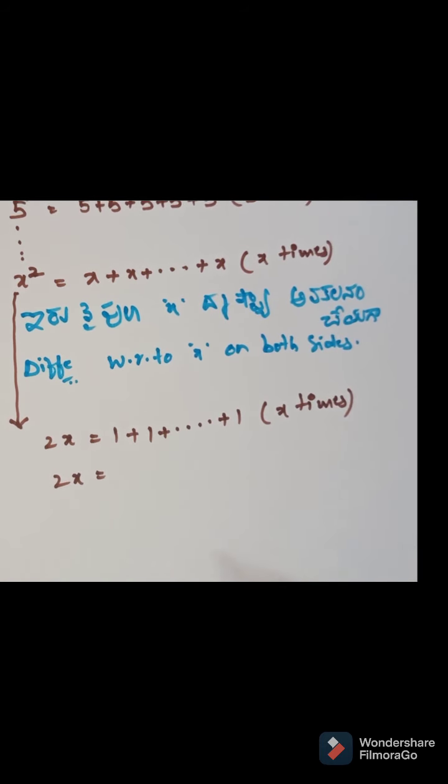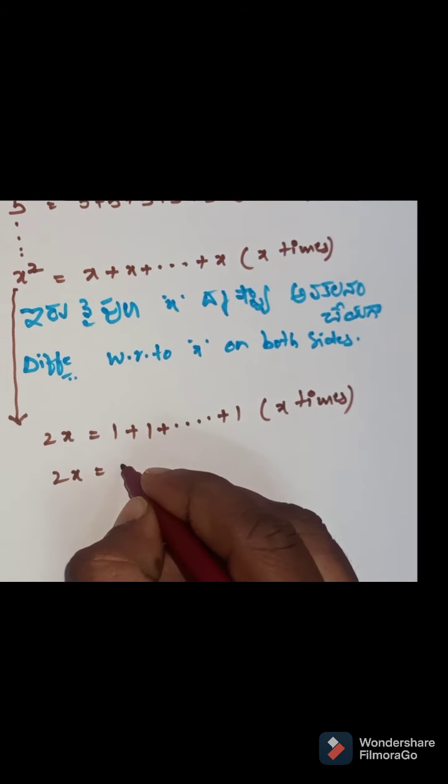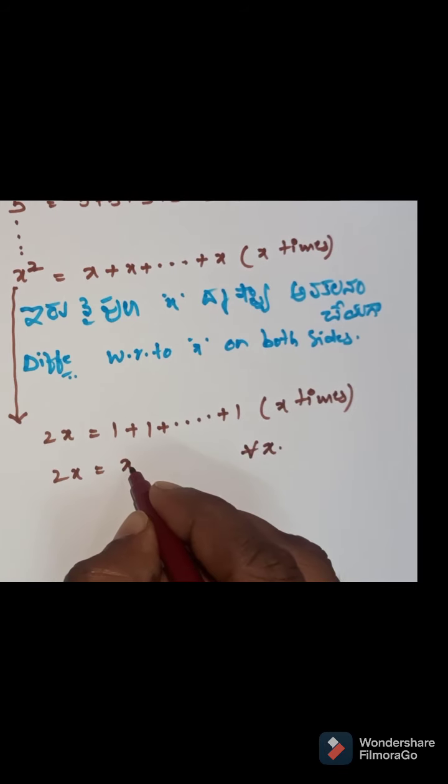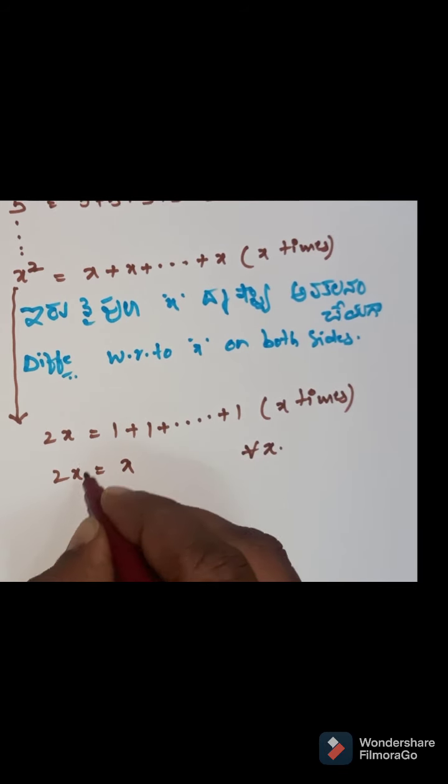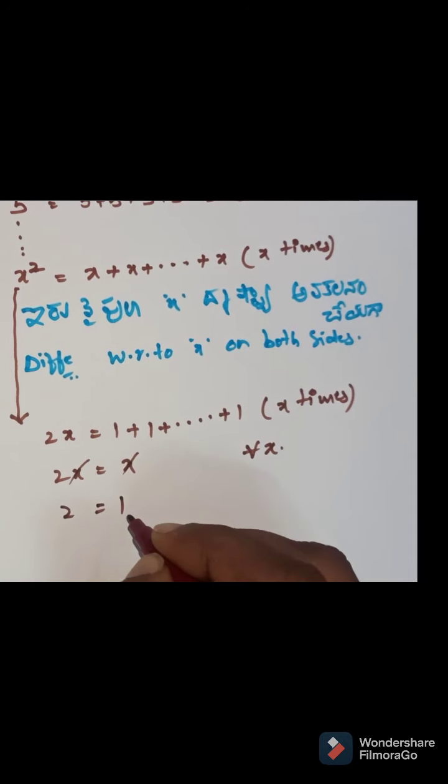Similarly, 1 and x times add, x is equal to x, so x cancels, 2 is equal to 1.